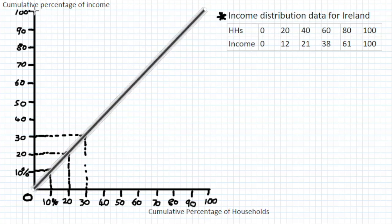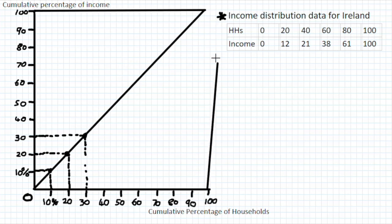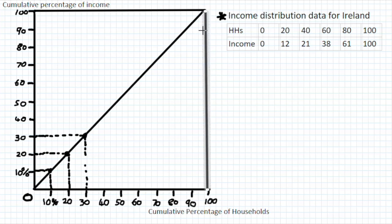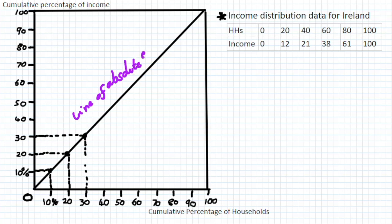At 100% in terms of income, that shows 100% of households attaining this level, so we can close off our box. We now have our Lorenz curve diagram with our line of absolute equality drawn in.